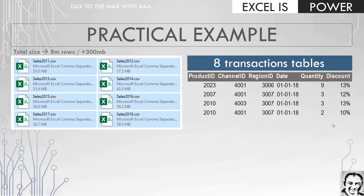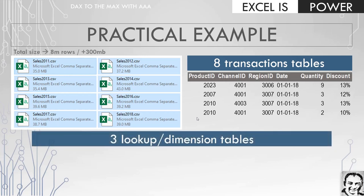You can see a small preview of the data inside these tables. We have the product ID, channel ID, region ID, date, quantity, and discount. On the other hand, we have some lookup tables — actually three lookup tables or dimension tables. The first is the channel lookup table containing the channel name and channel ID, and you can link between the channel ID inside the transaction table and the channel ID inside the lookup table.